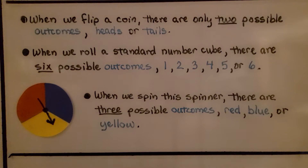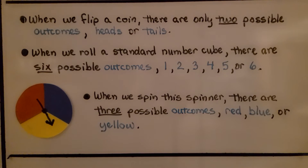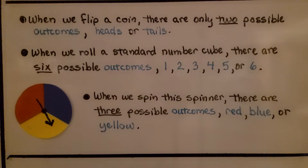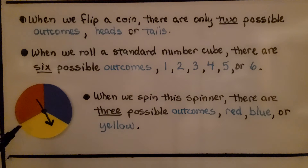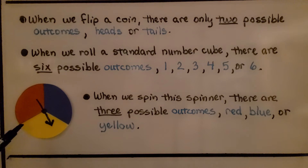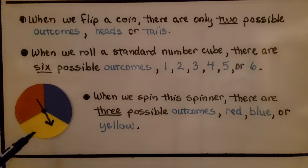When we flip a coin, there are only two possible outcomes: heads or tails. When we roll a standard number cube, there are six possible outcomes: one, two, three, four, five, or six. When we spin this spinner, there are three possible outcomes: red, blue, or yellow.